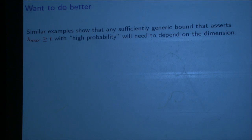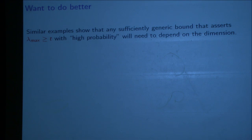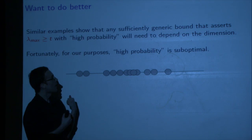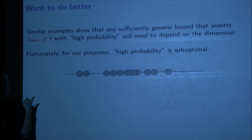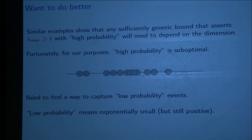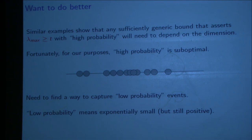Similar examples show that any sufficiently generic bound asserting lambda max is greater than or equal to t with high probability will depend on the dimension. But for our purposes, high probability is suboptimal. If I'm telling you that something is happening with high probability, my bound is somewhere around here. Whereas if all I need is to show that something exists, it would be better if my bound were much lower. So we're going to try to do that — but to do so, we need to find a way to capture low probability events. Here, low probability means exponentially small but still positive. Before this work, as far as I know, there were no ways of doing this. You either had concentration bounds or nothing. So we're going to try and find something that's not a concentration bound.